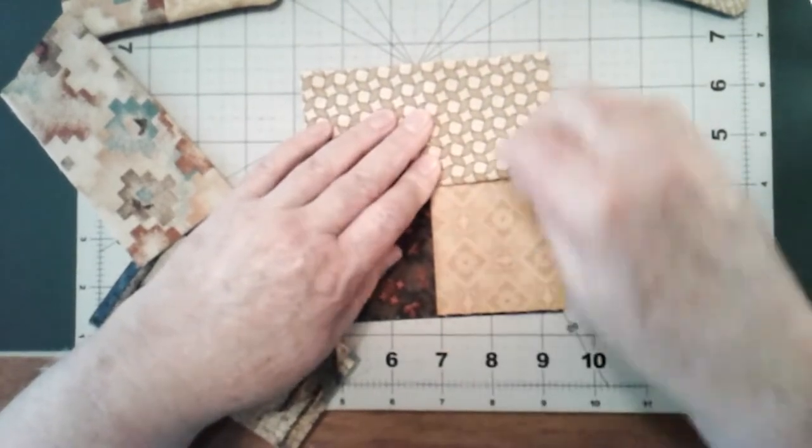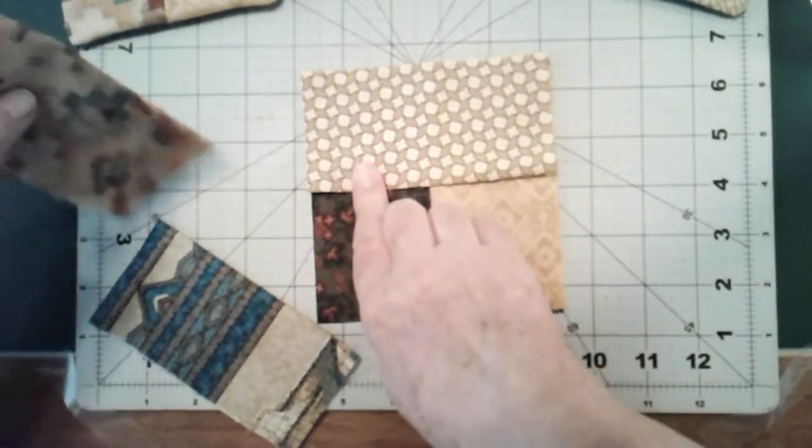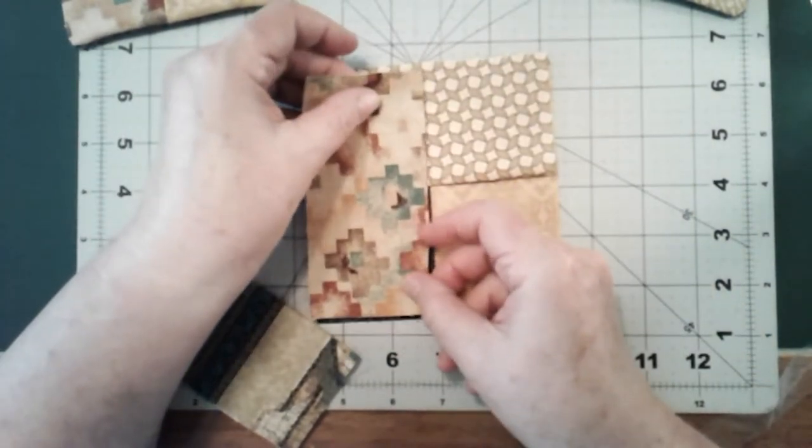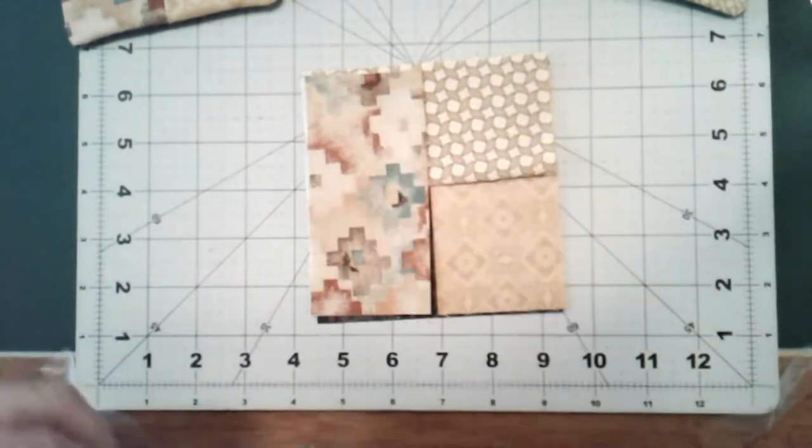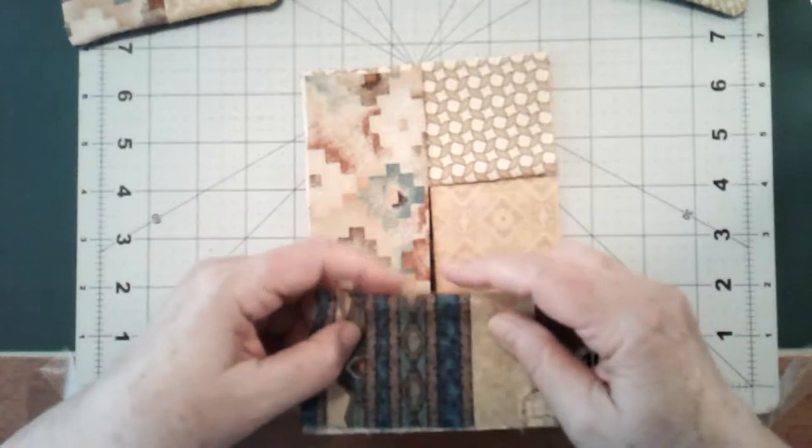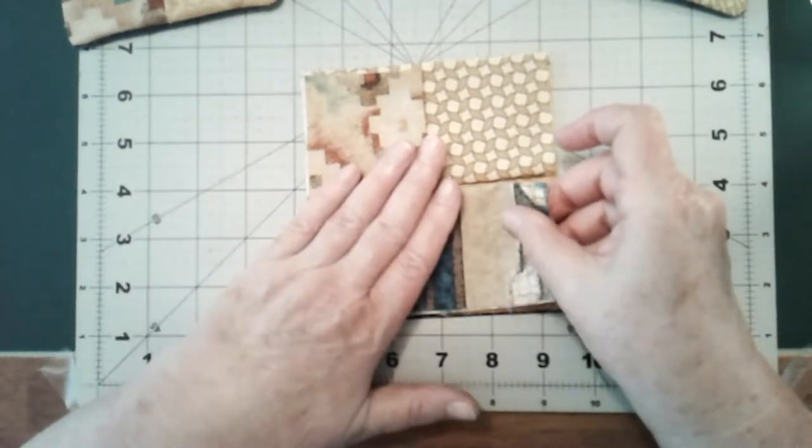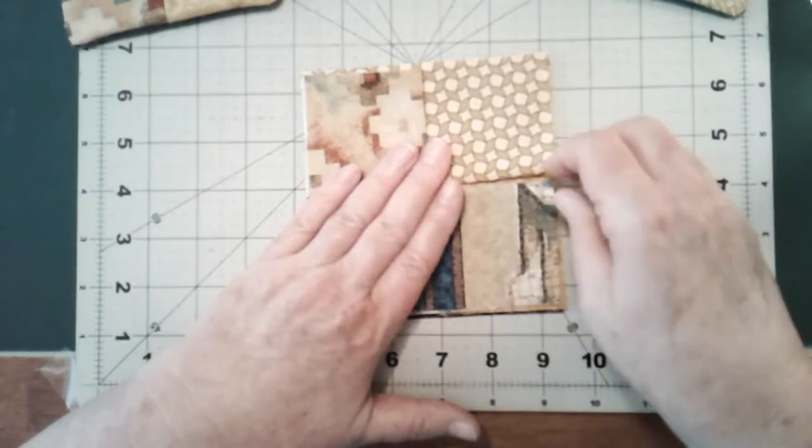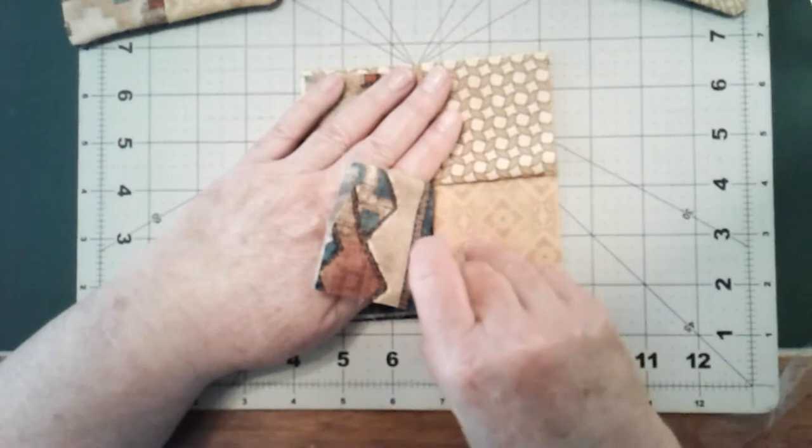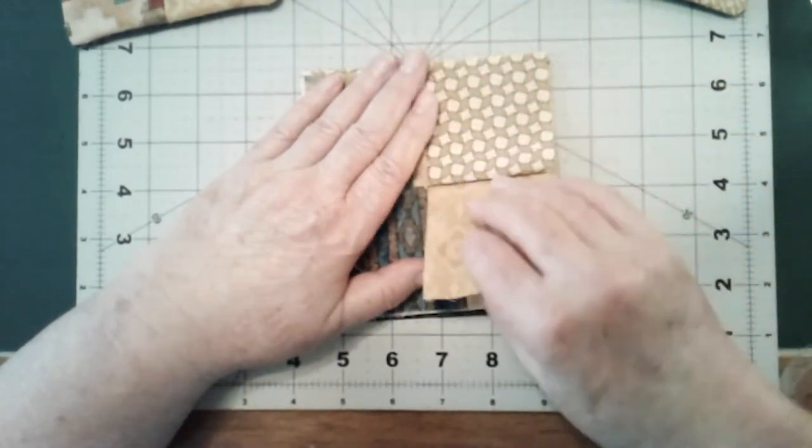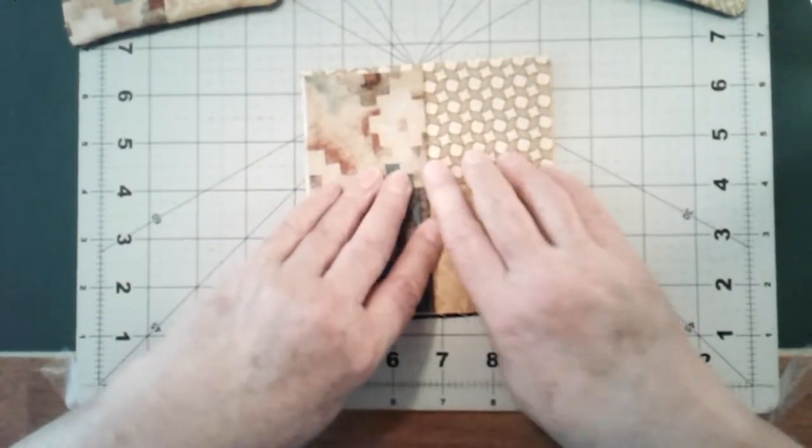So number one is showing here, number two is showing here, and on number three we're going to put number three on top of number two. Now it's time for number four. The fold goes to the middle. But wait, we've covered up number one. So holding these down, we're going to lift up that part of number one and bring it back over.